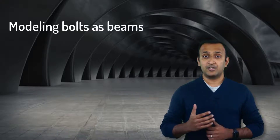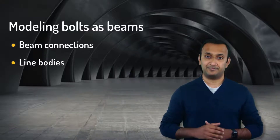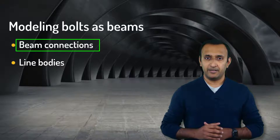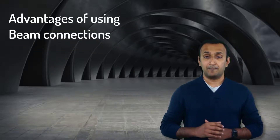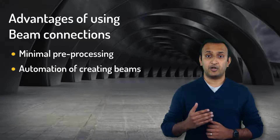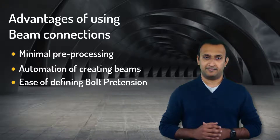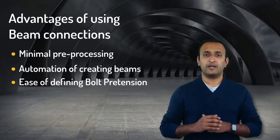In case of modeling bolts using beam elements, we have two additional options. One is to model bolts using beam connections and the other is by modeling bolts as line bodies. It's recommended to use beam connections since there is no need for the bolt geometry and the mesh is created automatically with beam elements by ANSYS Mechanical. The advantages include minimal effort in pre-processing, automation of creating beams using object generator, and simple drag and drop operations to create pre-tension objects. These advantages make beam connections the recommended way of modeling bolts using beam elements.